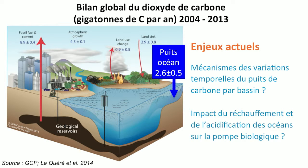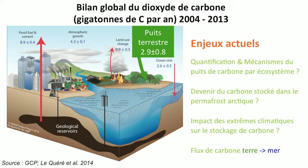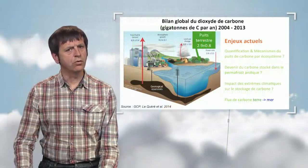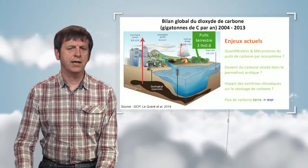We also see the impact of small-scale structures such as vortexes, which are being researched because we don't fully understand their impact, along with the impact of ocean water warming on the biological pump. For the land biosphere, the challenge is to quantify the relative importance of the various mechanisms contributing to carbon storage across different systems, better understand the future of stored carbon in Arctic permafrost, understand the impact of climate extremes on carbon storage, and better quantify lateral flows of carbon between the land and ocean reservoirs.